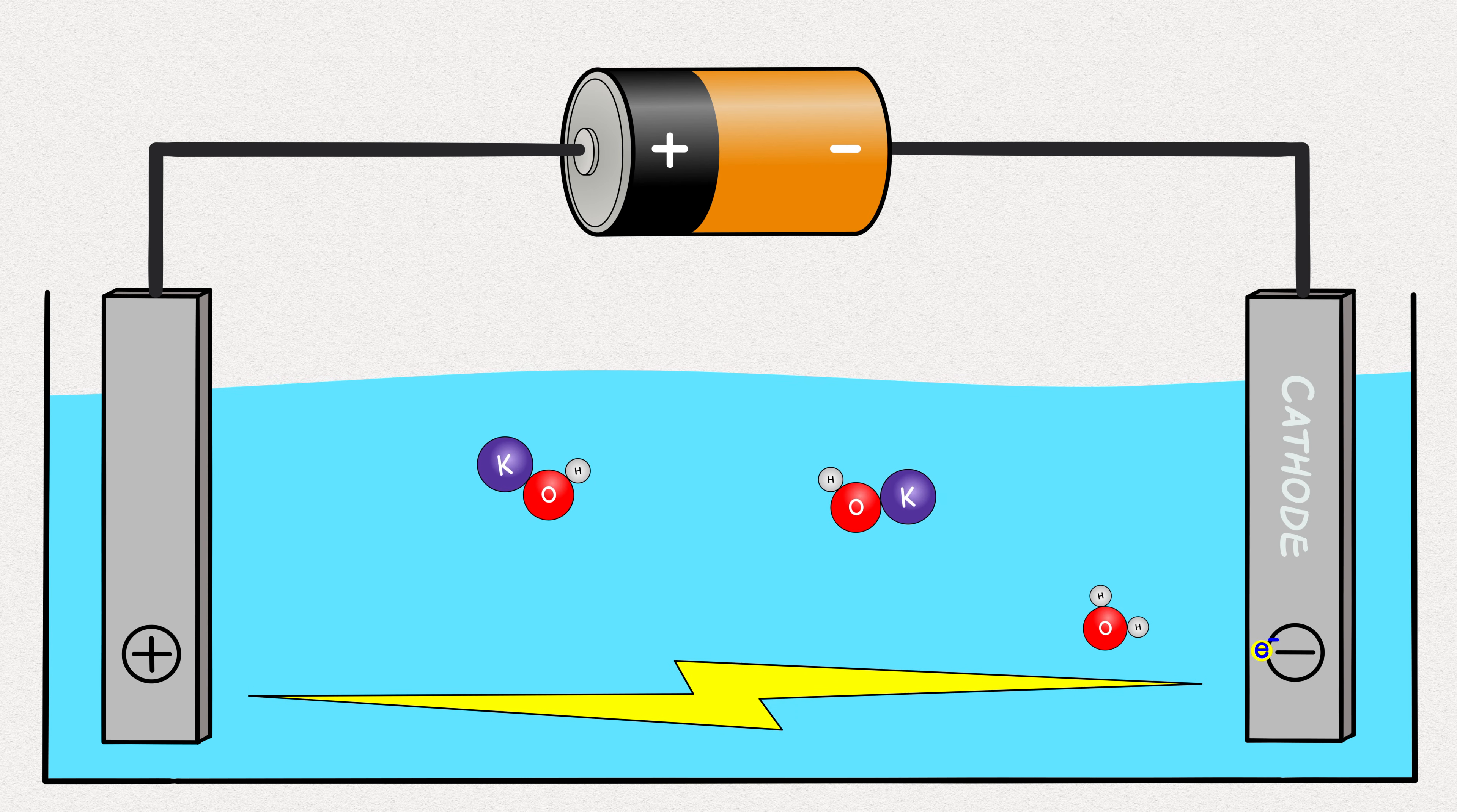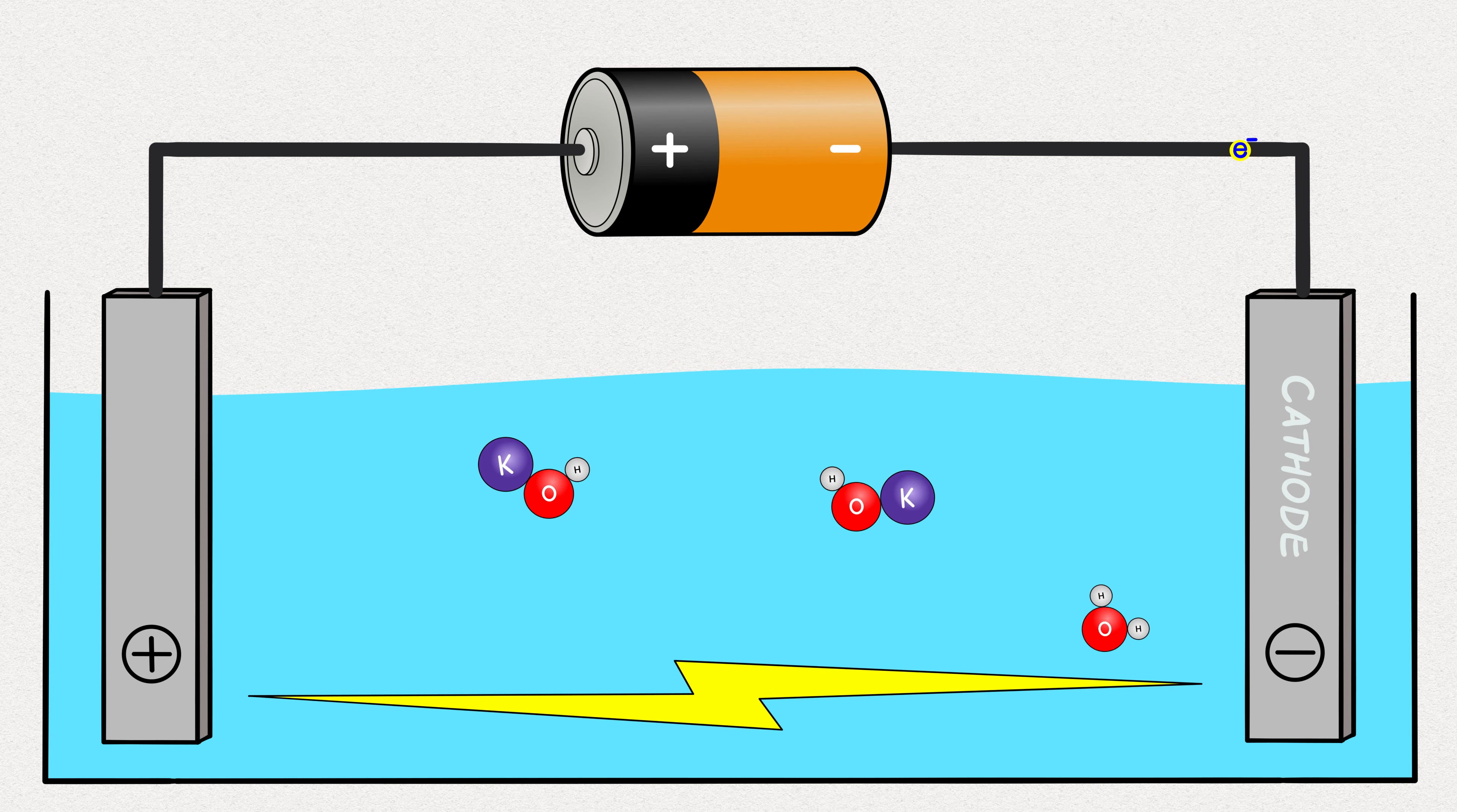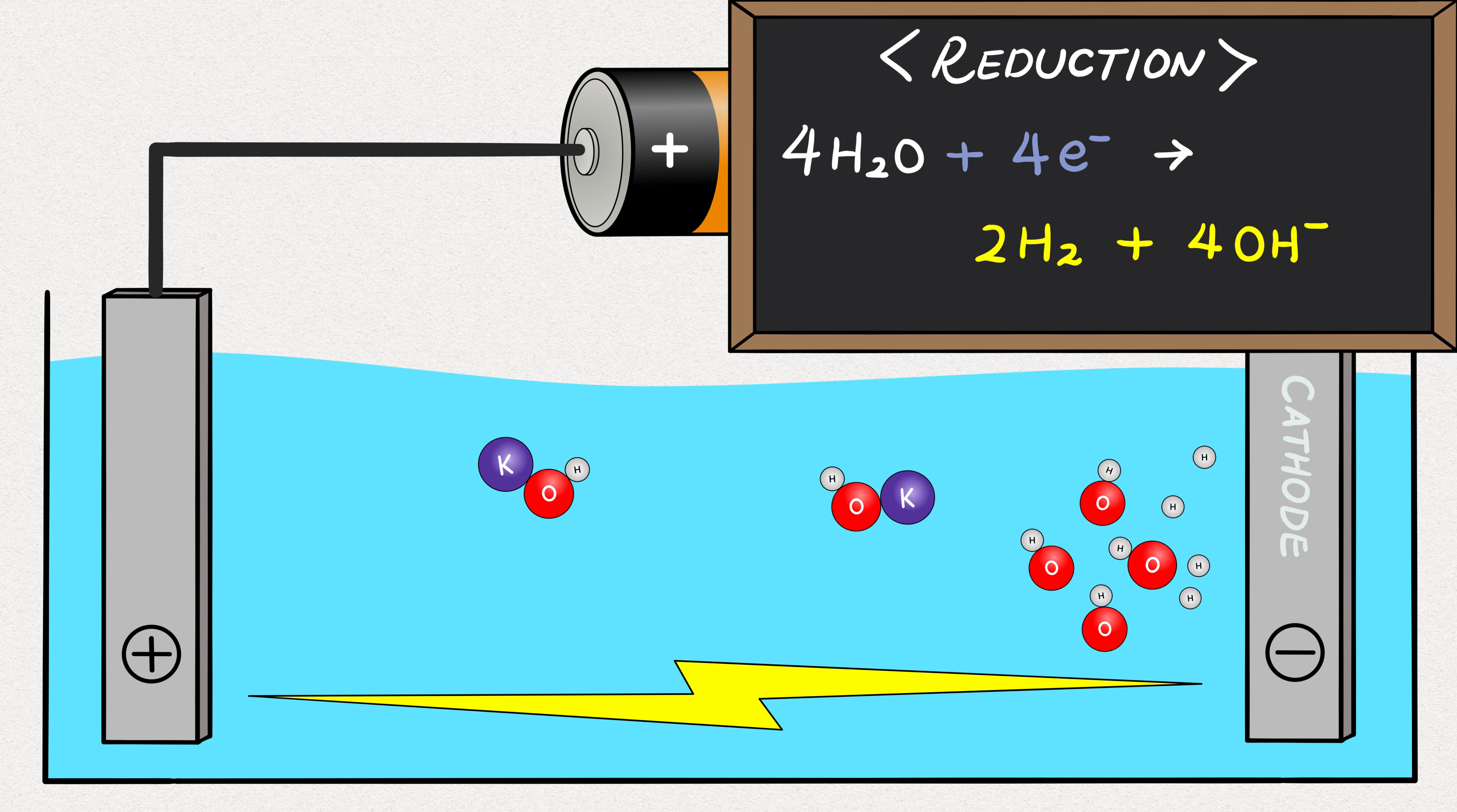When this happens, one of the hydrogen atoms in the water molecule gain an electron and escape, leaving behind the negatively charged hydroxyl ion. If we started with four H2Os, adding four electrons will result in two H2s and four hydroxyl ions. This reaction is called reduction.